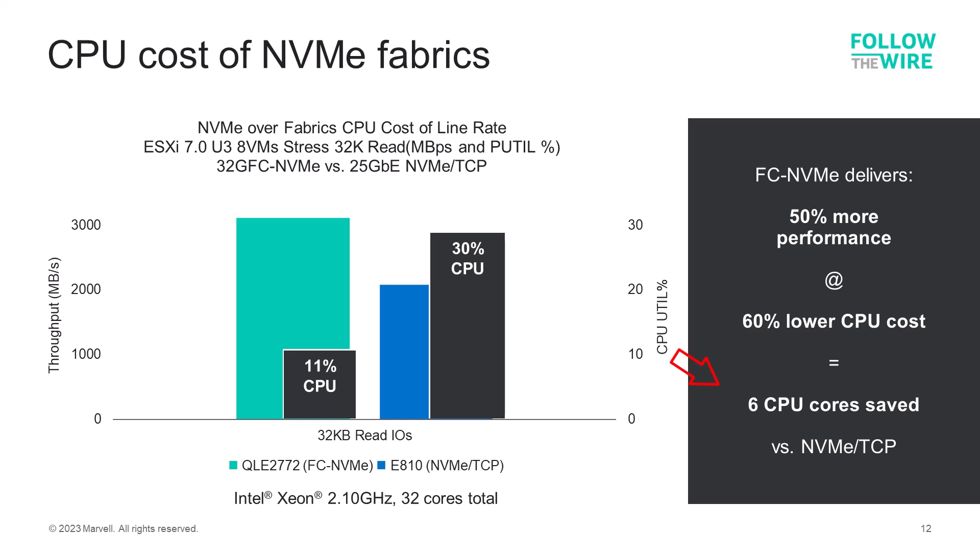Why is fiber channel more efficient? It's fully hardware offloaded, whereas ethernet technology — including NVMe over TCP and iSCSI — both use software initiators that require additional CPU resources for every IO transaction.